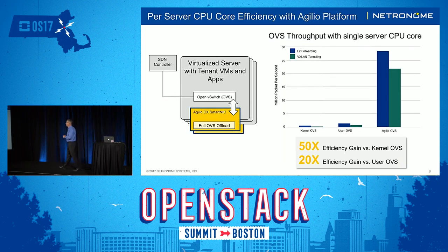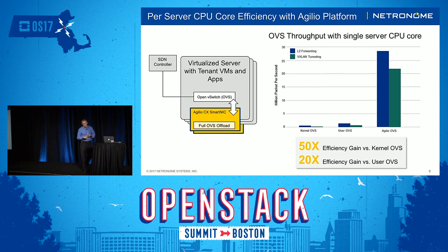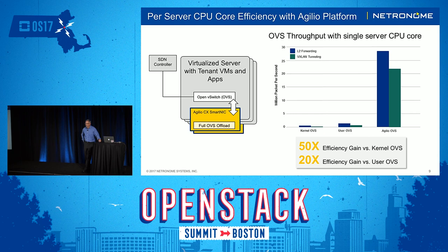With your virtualized server, you're doing a full OVS offload. We've shown that you can burn up to 12 CPU cores just running 40 gigs of network traffic. If you pin your OVS down to a single core, with our adapter you can get about 25 million packets per second on L2. Using VXLAN tunneling, you still get about 21 million packets per second on a single core. If you pin your kernel-based OVS to a single core, you're going to get about 3 million packets per second — so your ability to reach line rate is severely curtailed.